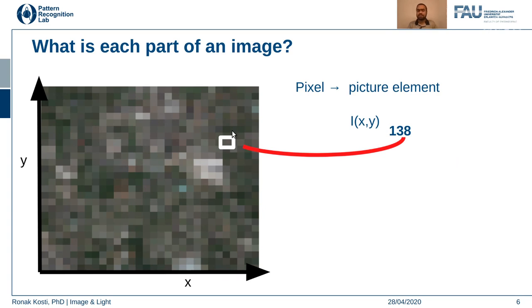When you look at an image, what do you mean by a pixel? A pixel is the minimum, smallest form of image representation. A collection of such pixels gives you an image. For example, in a 2D image, if you take the minimum unit of representation, it is called a pixel, and the value at that pixel represents the intensity of the color you are viewing.